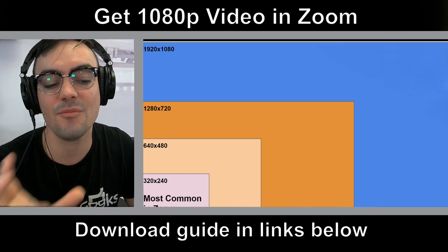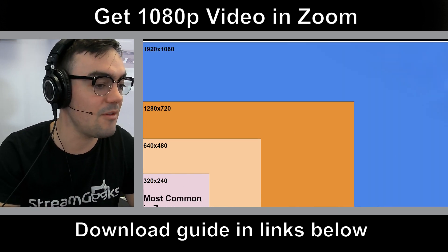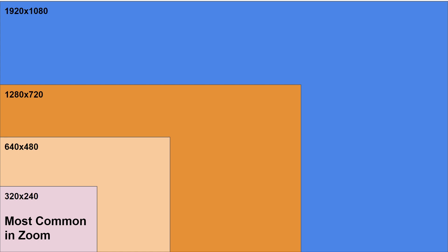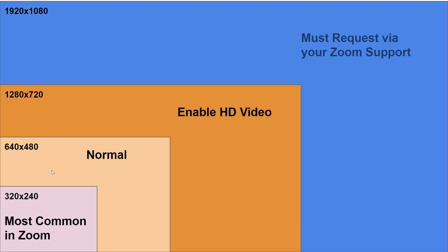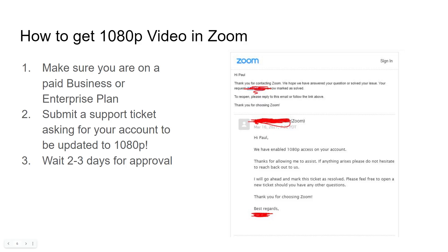I put together this little slide. Essentially the most common video in Zoom is 320 by 240, then it's normal to get 640 by 480, you can enable HD video to get 1280 by 720, and then you need to request 1080p access from Zoom support — they'll enable it for you if you're eligible. So make sure you have a paid business or enterprise plan, submit a support ticket, and just wait two or three days.